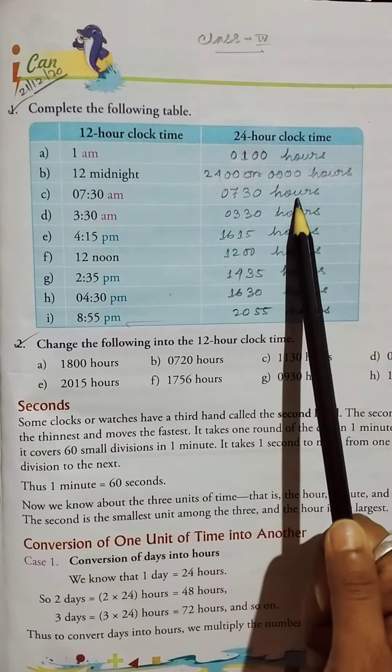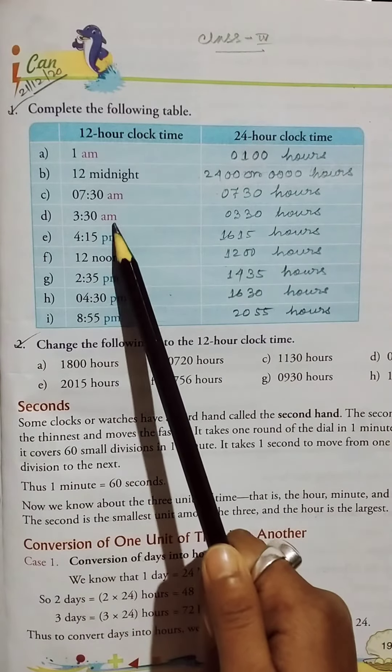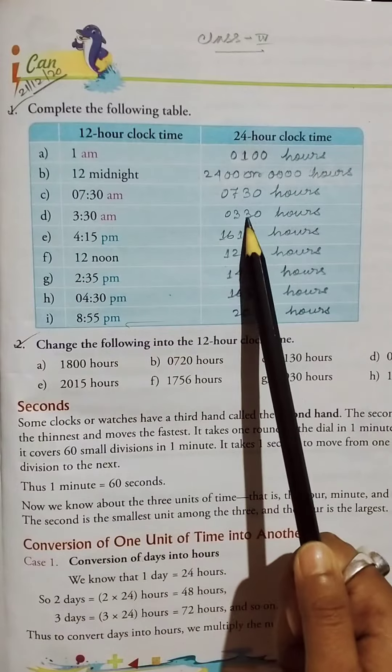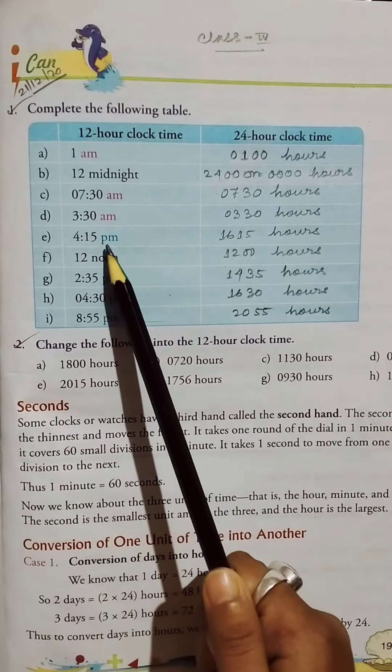So 0730 hours. Then 3:30 a.m., so 0330 hours. Then 4:15 p.m.